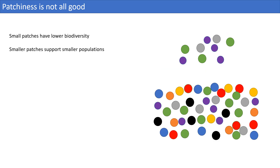Smaller patches support populations of smaller size, mainly because they have fewer resources. Small populations are generally more sensitive to changes in demography or genetic structure and are at higher risk of extinction. If, without any selective pressure, a few individuals are randomly eliminated from a small population, the effect will proportionally be larger than in a large population — the genetic diversity of the small population may be almost halved. This can increase mating between related individuals, and inbred offspring is often less fit for survival than outbred offspring, making the small population even more vulnerable.